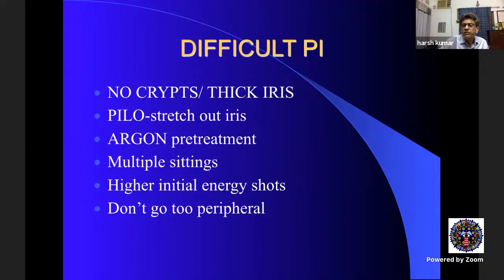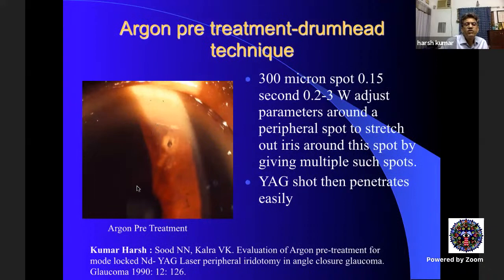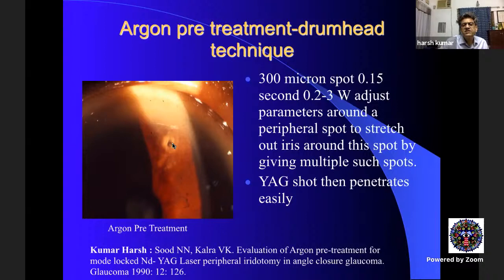For a thick iris with no crypts: use pilocarpine two to three times to stretch the iris, then use multiple sittings. If you complete part of the iridotomy, wait one to two hours for pigment to settle, then repeat. Do not force completion in one sitting. An alternative technique is argon pre-treatment: large spots of 300–500 microns, 0.1–0.3 watts, 0.1–0.3 seconds — creating a drumhead pattern with superficial charring all around, stretching the iris so a high-energy YAG shot in the center will easily open it.